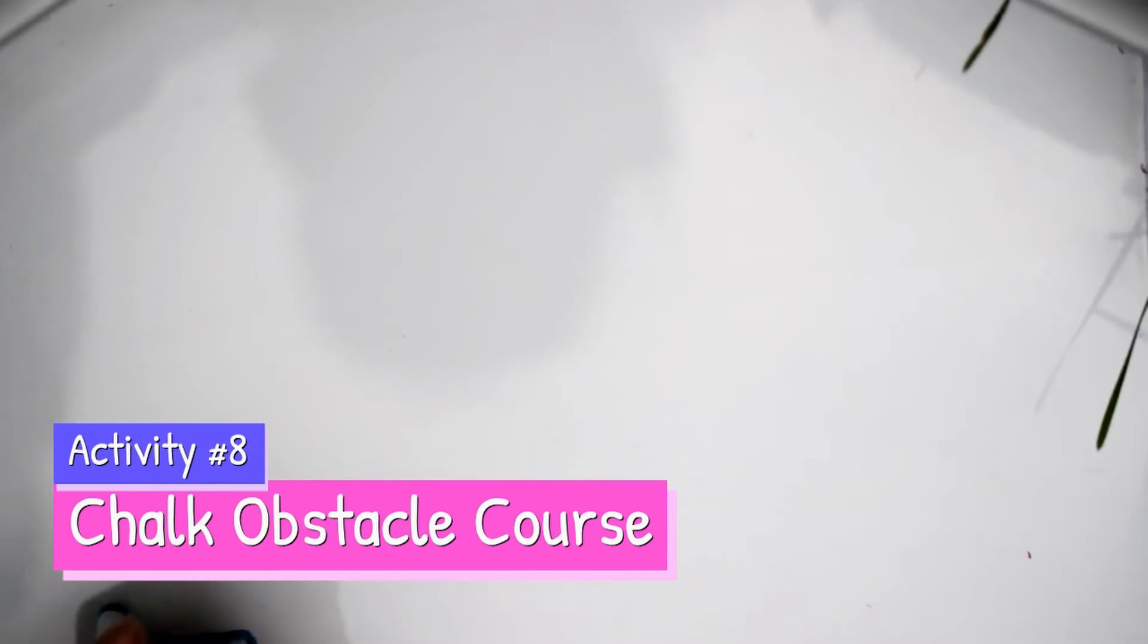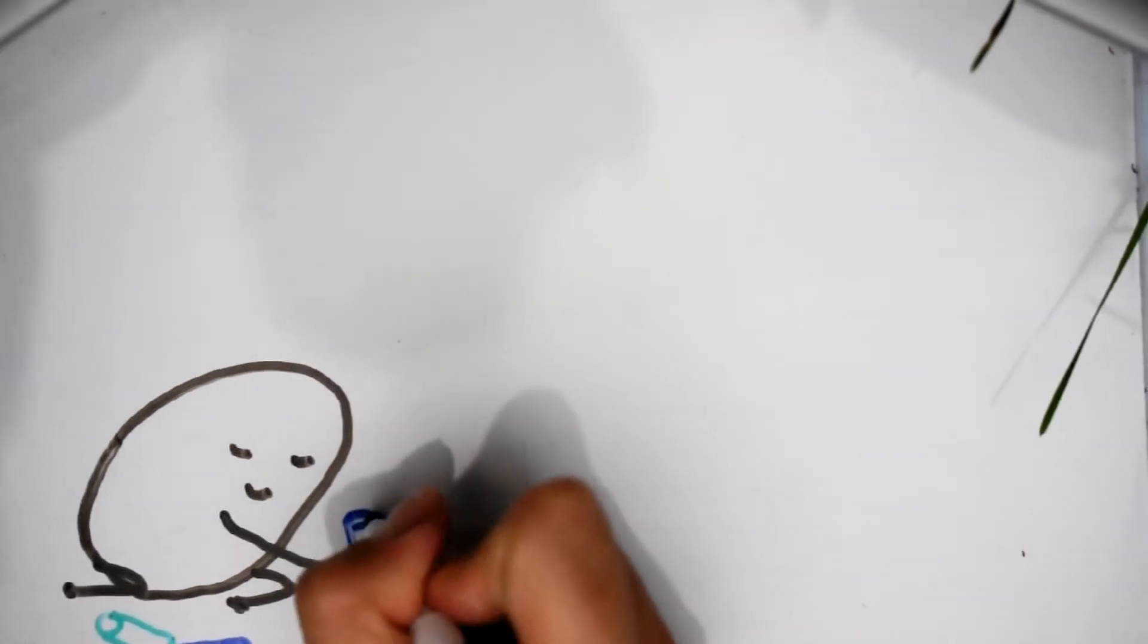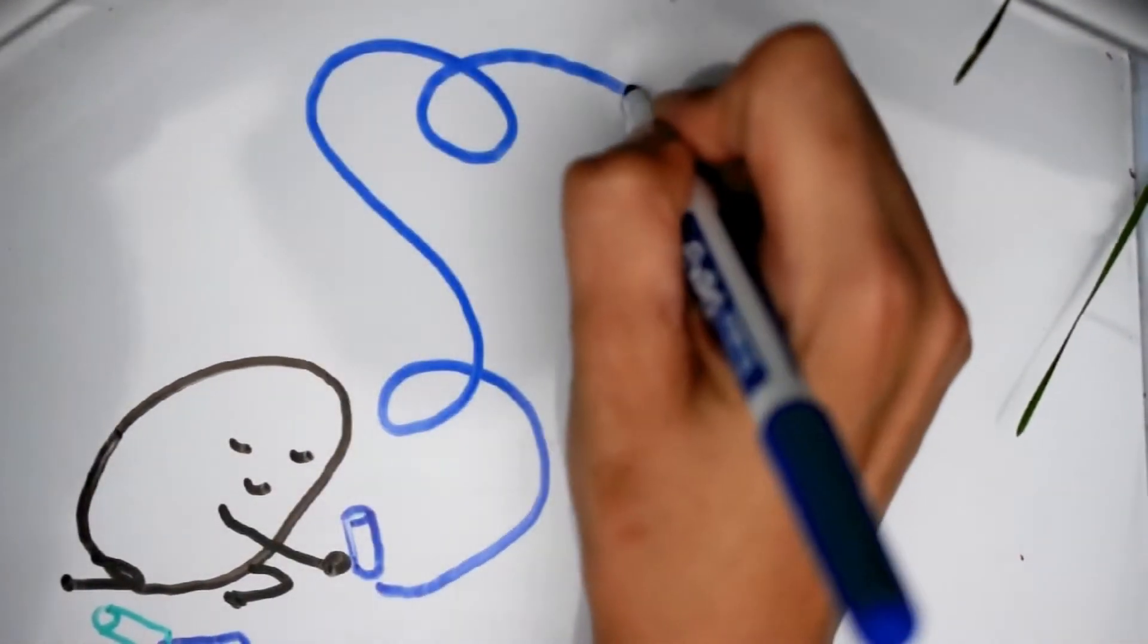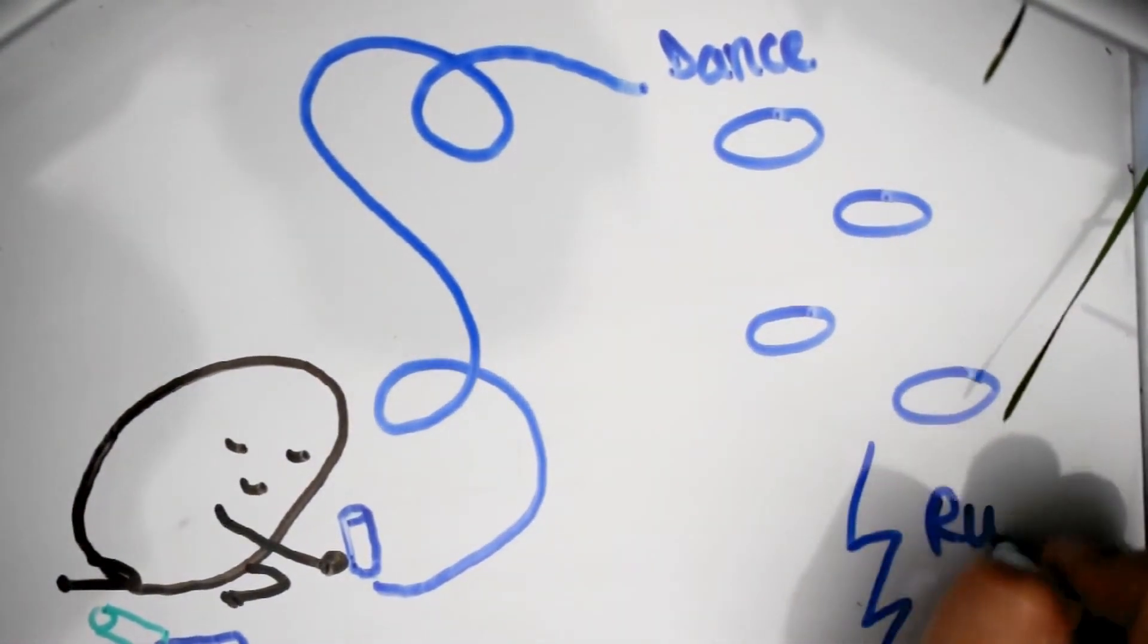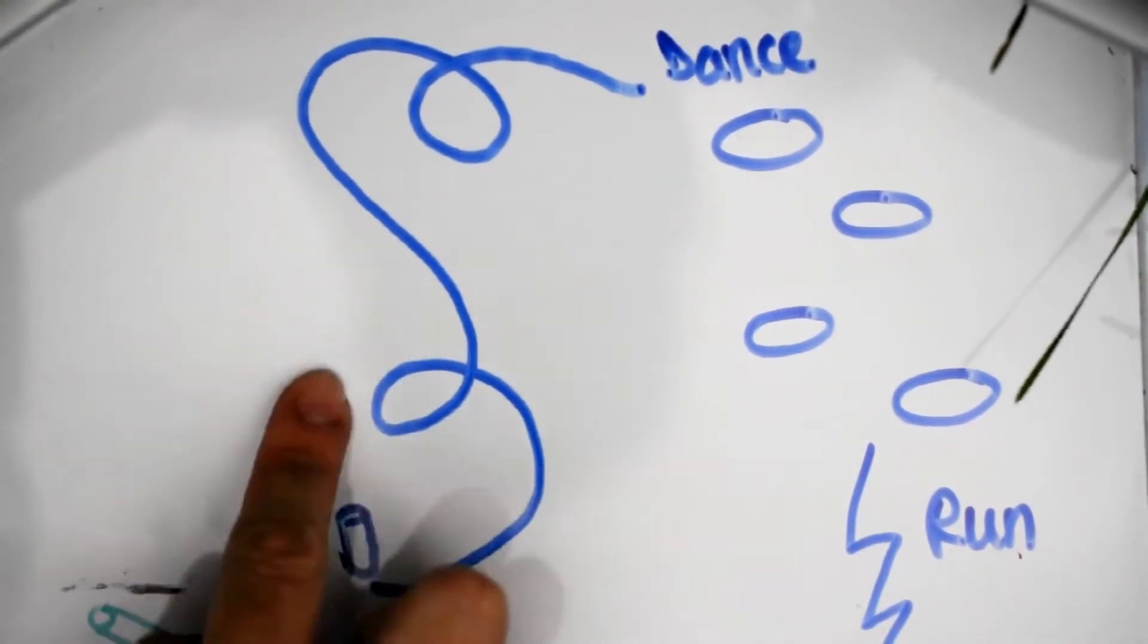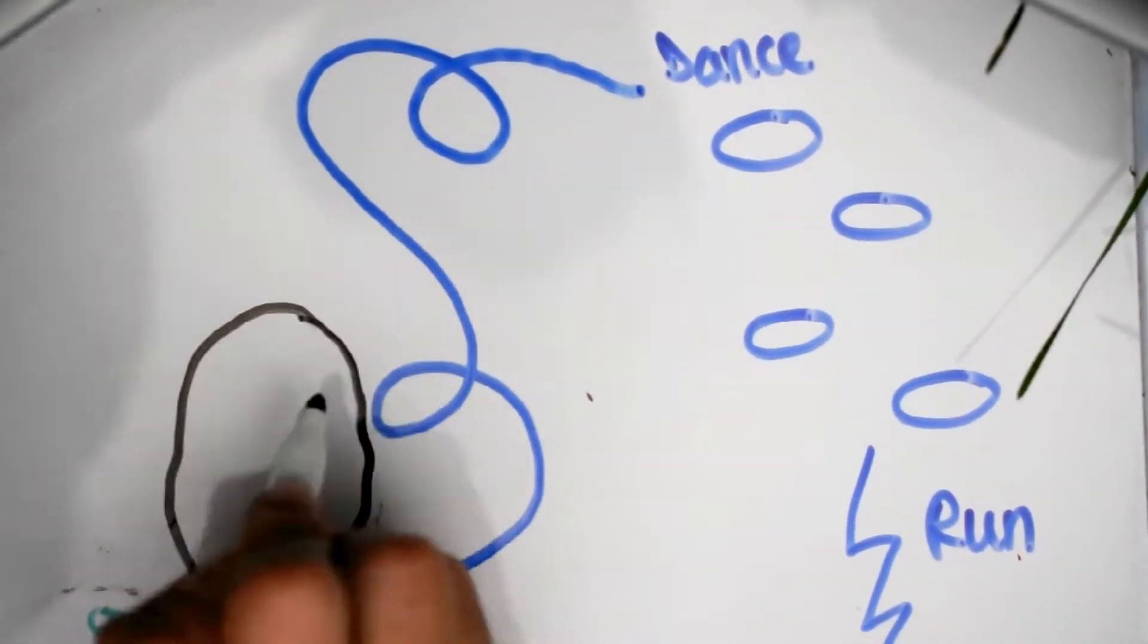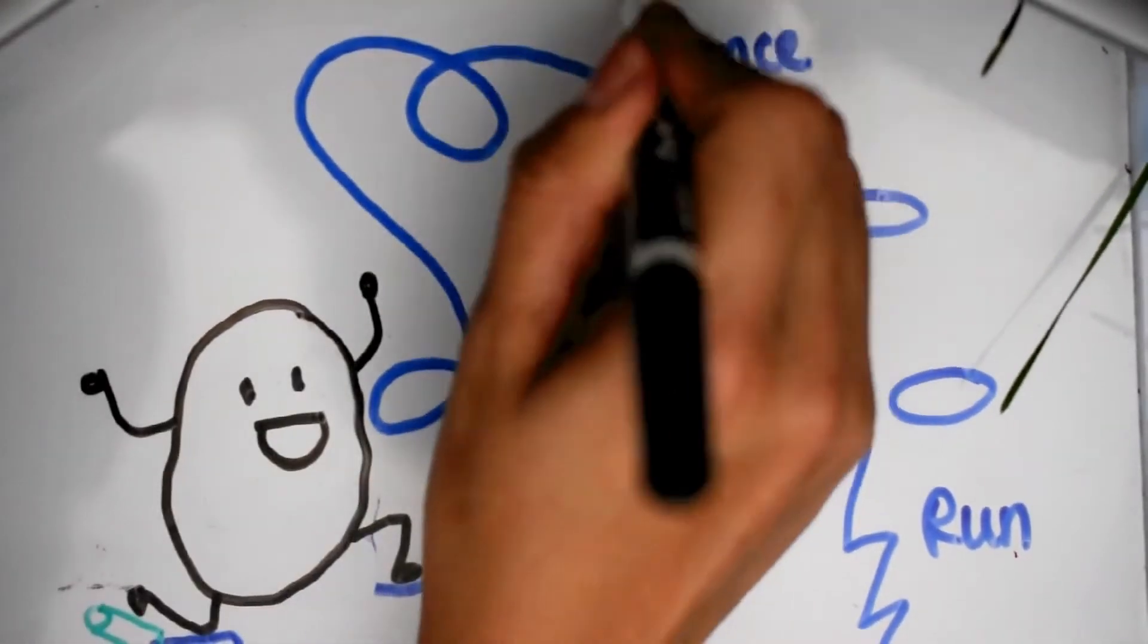Next, the potato dreamed about a chalk obstacle course. Find some chalk in a blank sidewalk or driveway. Draw out an obstacle course for yourself or for a friend to complete. Try to make it challenging by adding different activities along the way, like following a line, jumping on circles, or a running finish. It doesn't have to be long to be challenging. Be creative!